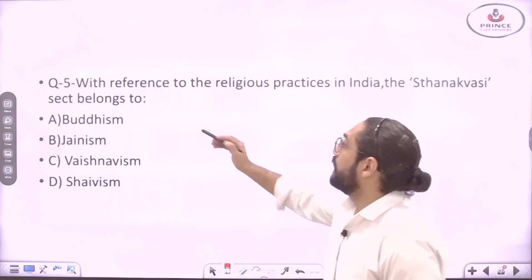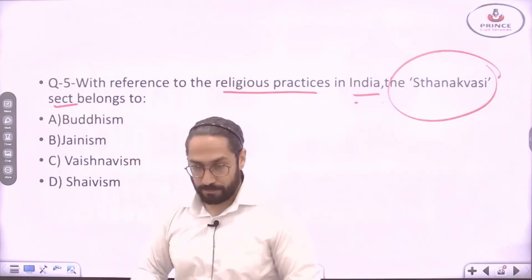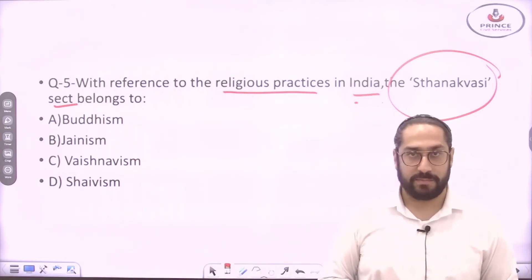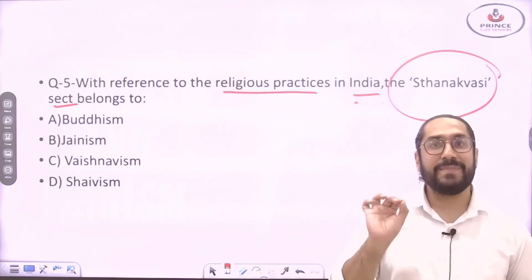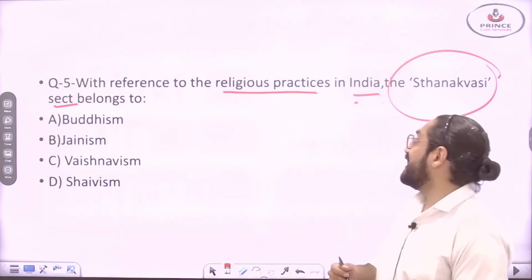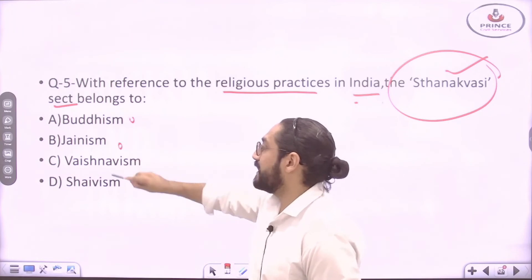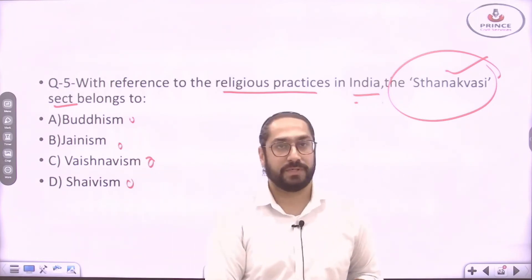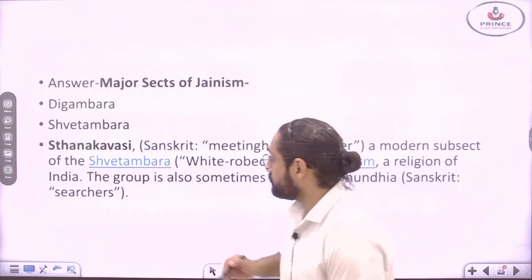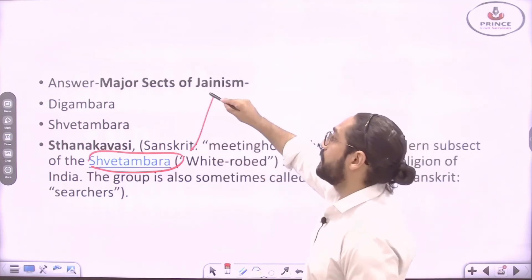The last question for today: With reference to religious practices in India, the Sthanakavasi sect belongs to which religion? As mentioned in the introduction, you must remember the sects of Jainism and Buddhism. The options are: Buddhism, Jainism, Vaishnavism, or Shaivism. The right answer is Jainism. Sthanakavasi is a sub-sect of the Shvetambara sect of Jainism.